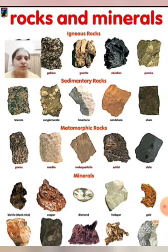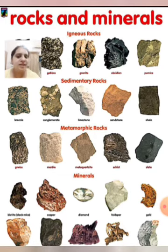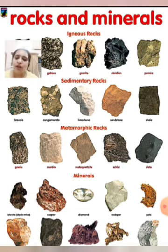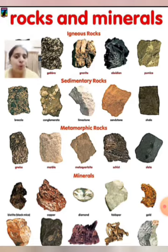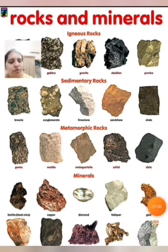This picture is about rocks and minerals. We have three types of rocks: igneous rocks, sedimentary rocks, and metamorphic rocks. We also have minerals — like coal, petroleum, and diamond. These are not rocks but they are minerals. Even gold is a mineral. So you should know about your minerals and about the rocks.